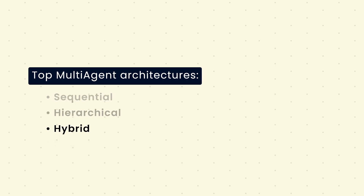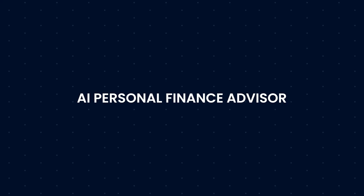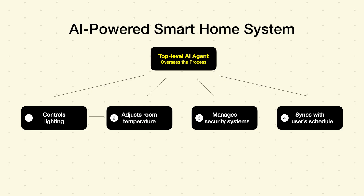A hybrid agent architecture is a mix of sequential and hierarchical — it allows both top-down delegation and continuous feedback loops. An example is an AI-powered smart home system, where a top-level AI agent oversees the entire home automation process, subagent 1 controls lighting and room temperature, subagent 2 manages security systems, and subagent 3 syncs with the user's schedule. This approach is common in robotics and adaptive AI systems where real-time decision-making is crucial.